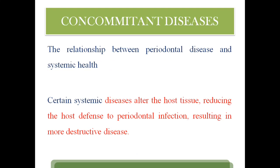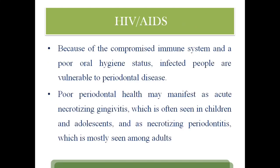Other systemic or concomitant diseases have a very significant effect on periodontal structures, causing alterations in host tissue and reducing the host defense mechanism. With regard to HIV/AIDS, it reduces the immunity of a person, leading to poor oral hygiene status — making them very vulnerable to periodontal diseases. In HIV patients, necrotizing periodontitis is commonly seen.